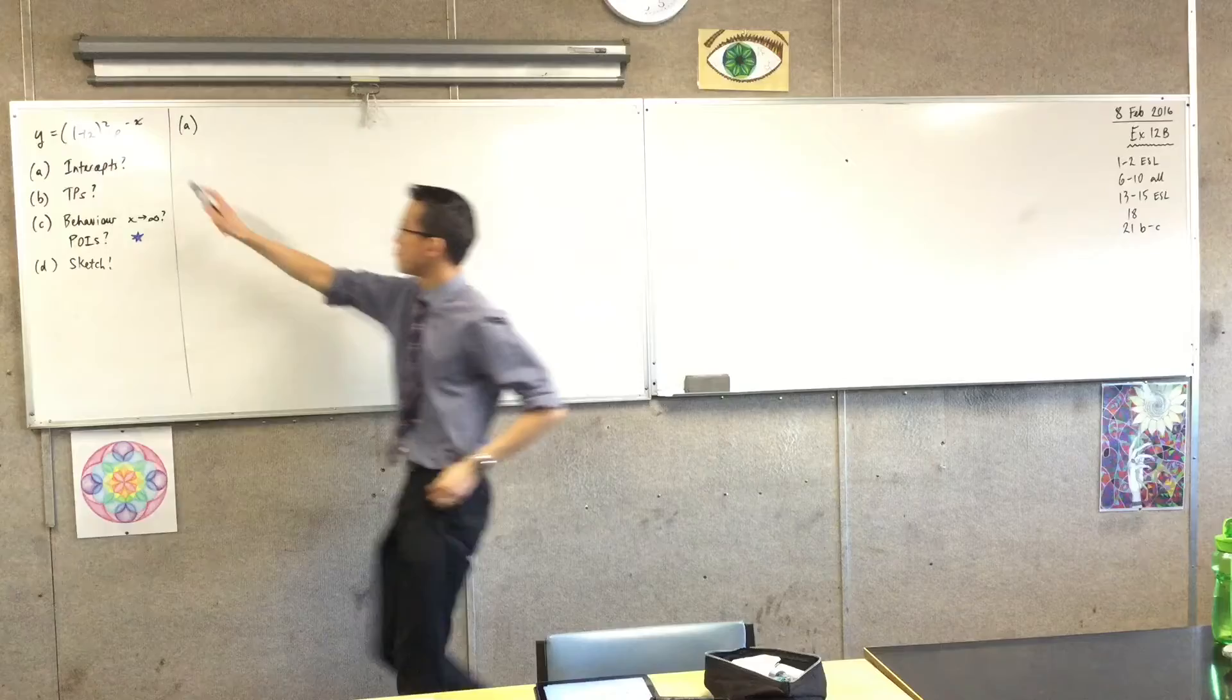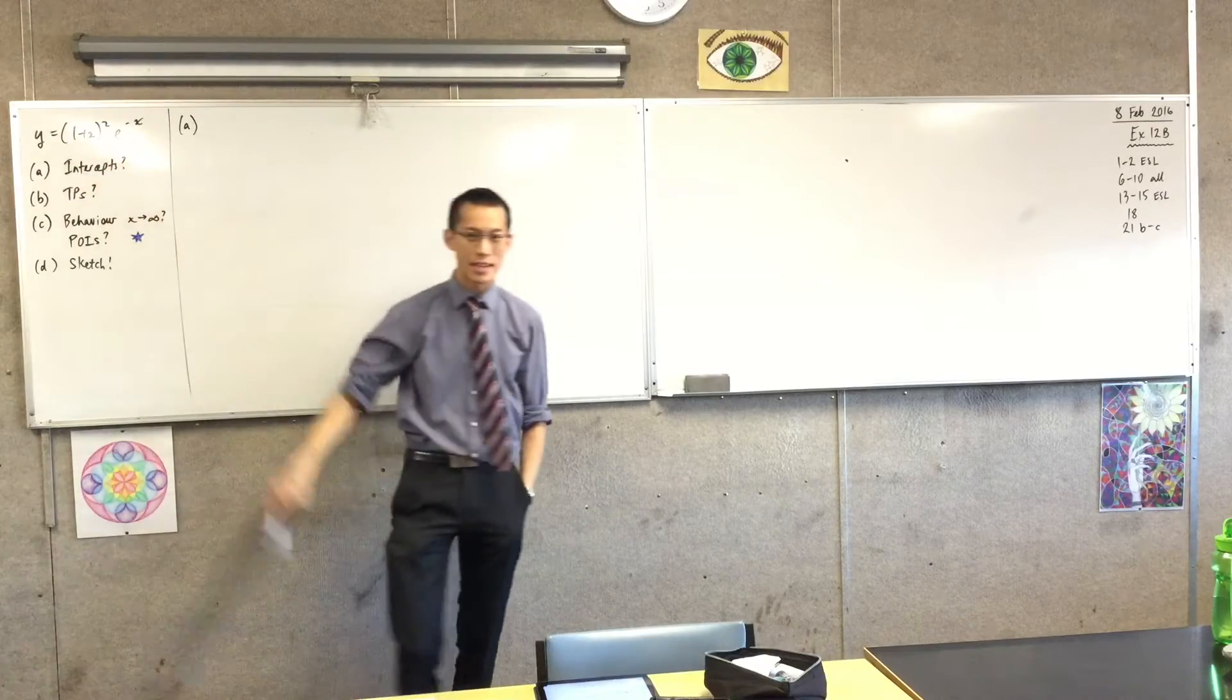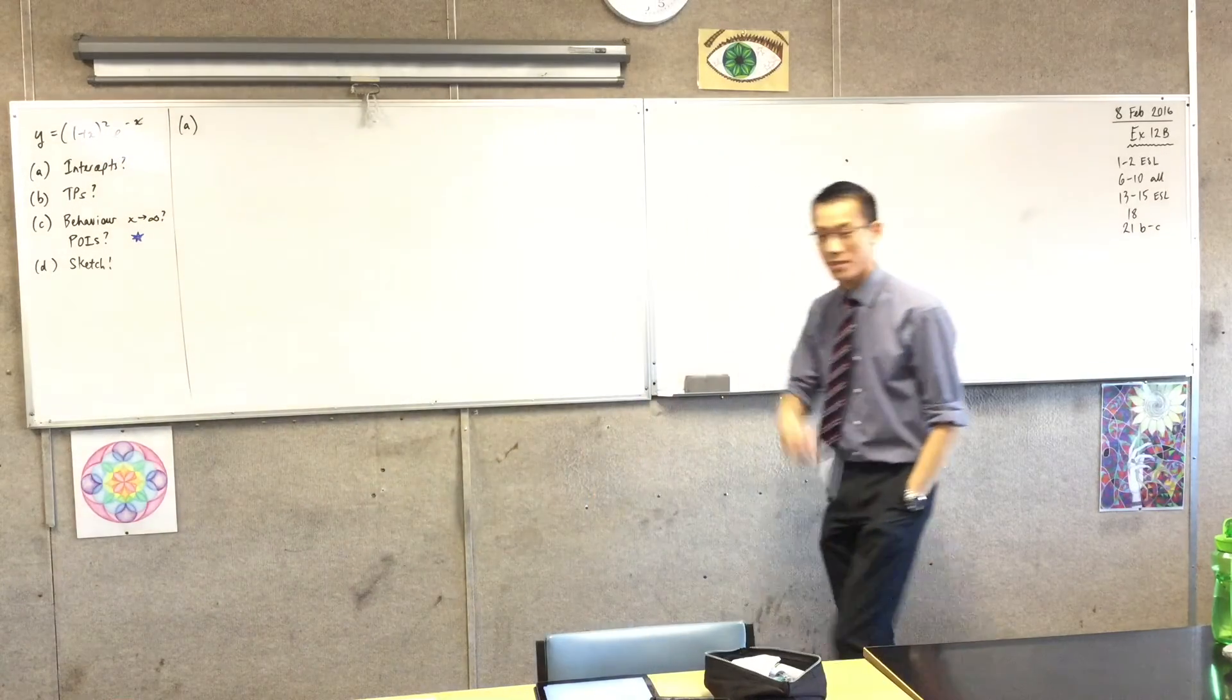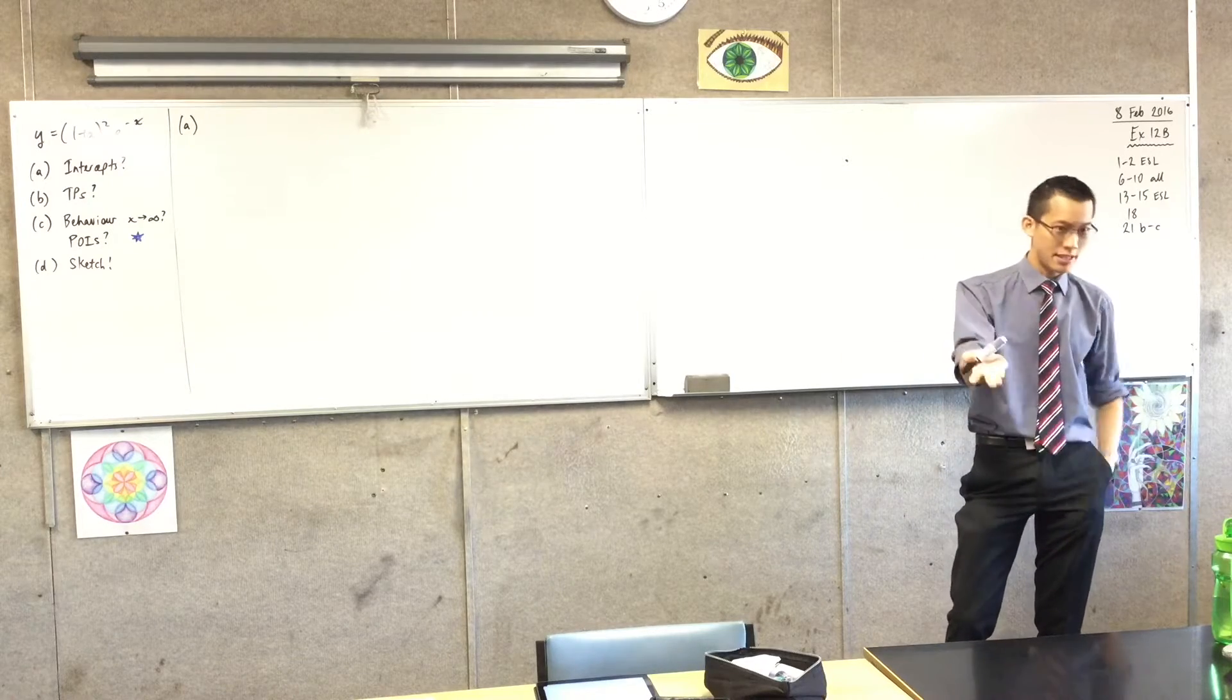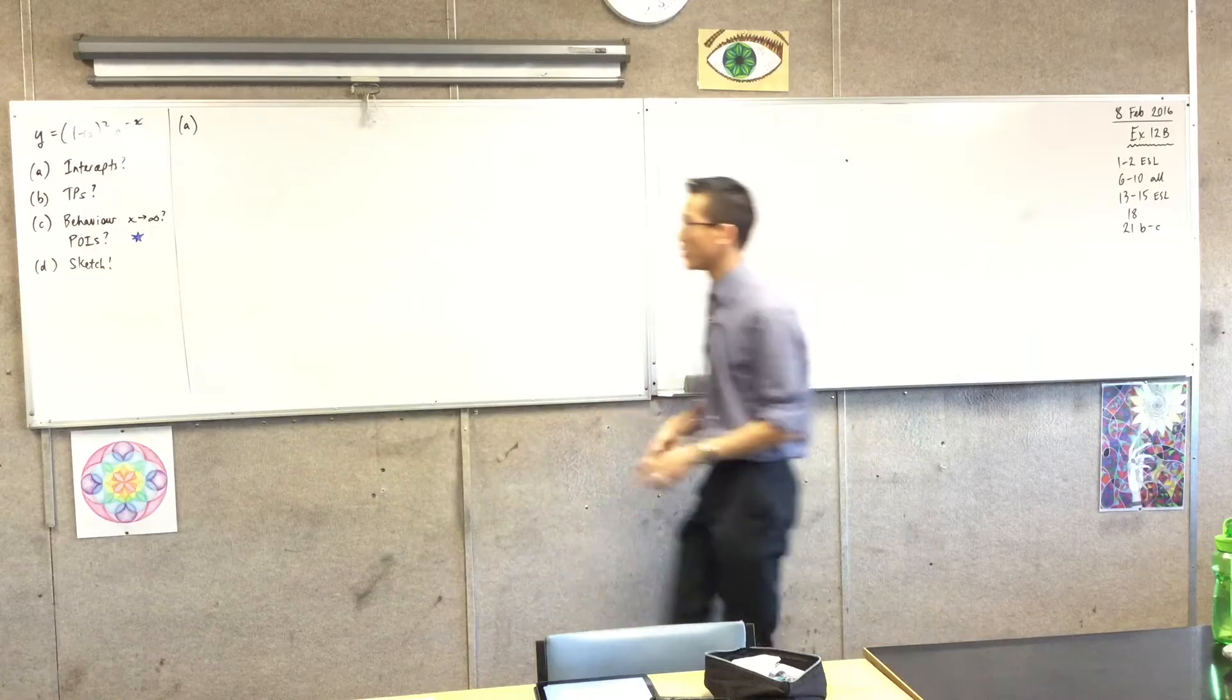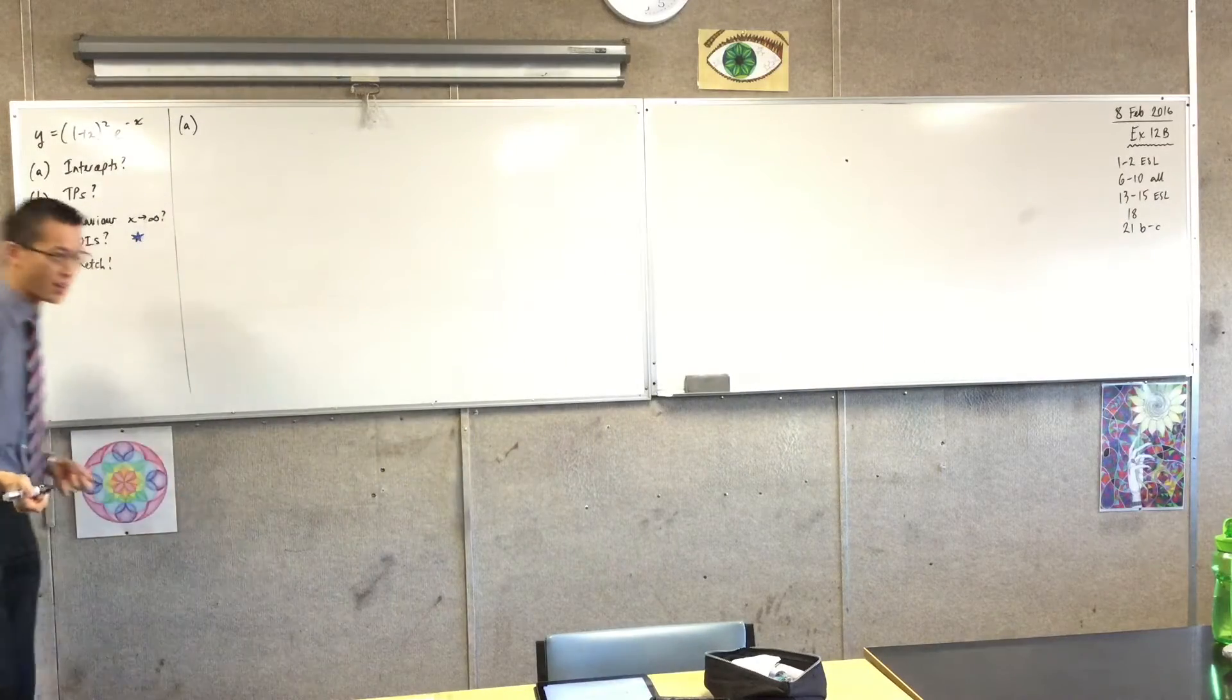So, there's your equation, (1 + x)² times e^(-x), good morning, and to find the intercepts, well, there's the x-intercepts and the y-intercepts, right? So, let's give this a crack, how do I find the x-intercepts?